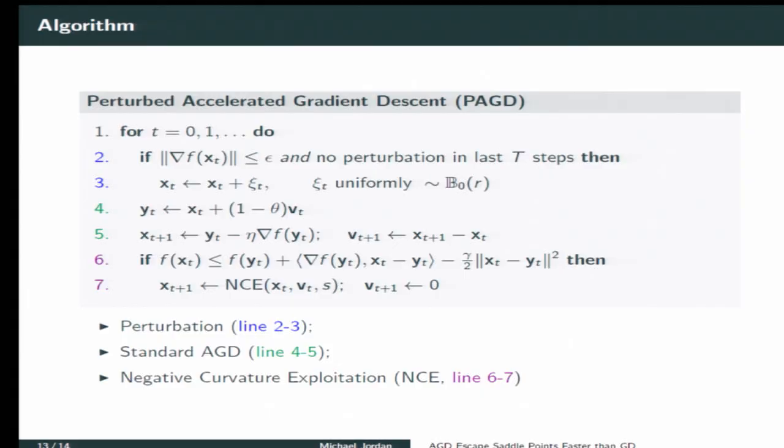Here's an algorithm. I don't want to spend much time on it. It is actually extremely simple. It's gradient descent, that's step four. It's accelerated gradient descent, that's step four and five. It is a perturbed form of this. We know we have to have some form of perturbation or we get poor results, and that's step three. It's a uniform perturbation in this case. And then step six and seven are this negative curvature exploitation. So you examine this Hamiltonian, and if that statement is true, then you do that. It's a very simple little step.